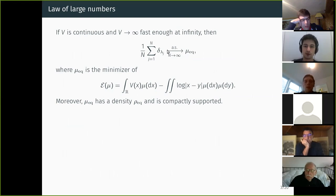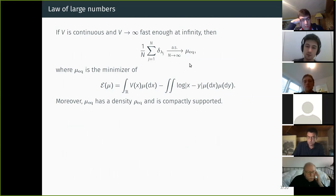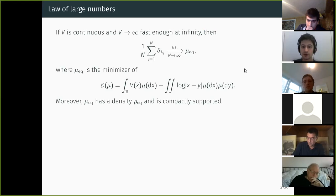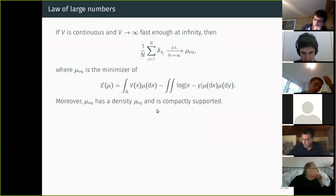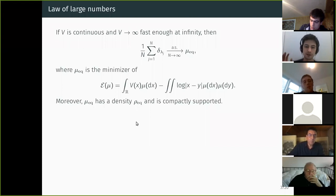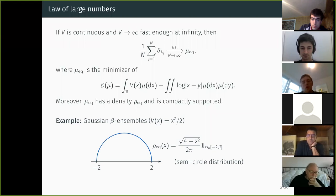The first thing to know is that if you pick particles according to this Gibbs measure, the empirical measure has a deterministic limit called the equilibrium measure mu_eq. It is the minimizer of the limiting energy functional. If V is nice, mu_eq has a density rho_eq and is compactly supported. For the Gaussian beta ensemble, the equilibrium measure is the semicircle distribution.